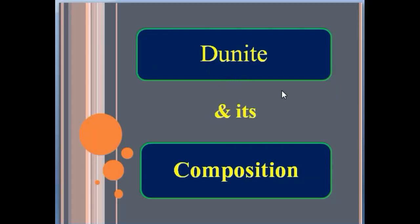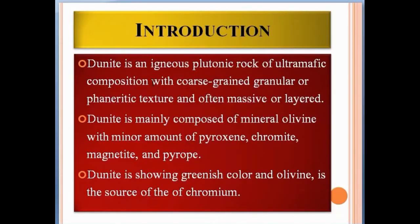Today we talk about dunite rock, including its composition. Dunite is an igneous plutonic rock of ultramafic composition with coarse-grain granular or fanatic textures, and often massive or layered structure. Dunite is mainly composed of the mineral olivine, with minor amounts of pyroxene, chromite, magnetite, and pyrope.